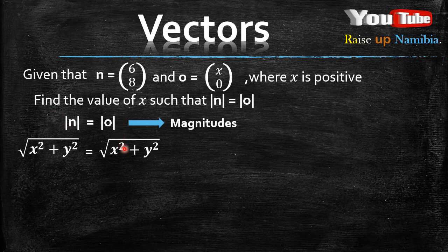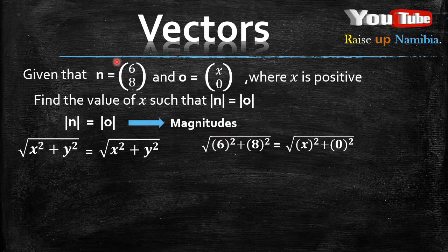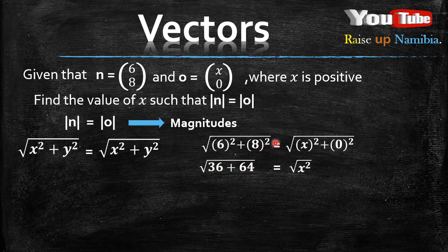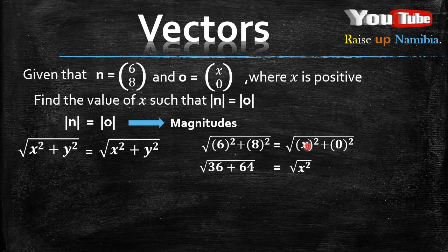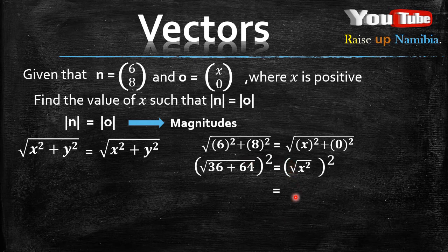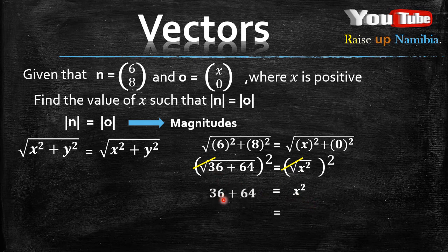Plug in the x and y values for vector N and vector O into the magnitude formula on both sides. We get: the square root of (6 squared plus 8 squared) equals the square root of (x squared plus 0 squared). Since 6 squared is 36 and 8 squared is 64, and 0 squared is just 0 so we omit it, we have the square root of (36 plus 64) equals the square root of x squared. To remove the square root, square both sides: 36 plus 64 equals x squared.